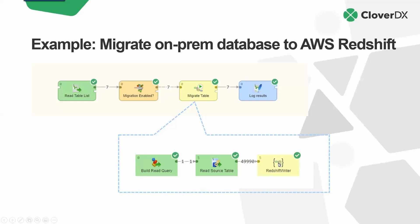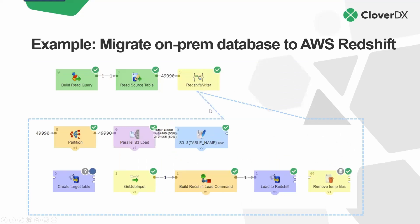If I open this component, it's just another package of Clover components — this is the Redshift writer. When you explode it, what's inside looks like this: take that set of 50,000 records and parallel upload them into an S3 bucket as fast as you can. We did two times parallel — we loaded half into one file and half into another as quickly as we could, and got those files up into S3. Then once they are in S3, we can dynamically build a load command which will pull the data from S3 and load it into Redshift using the Redshift COPY command. We can then do post-load transformation, like cleaning up the temp files, or issue another command to perform some post-load transformation inside of Redshift.